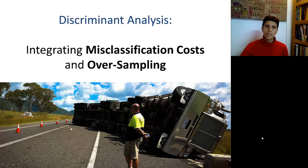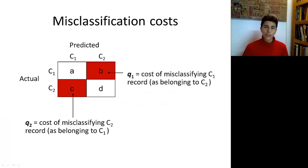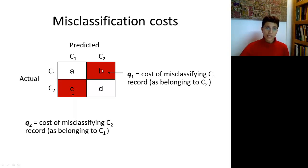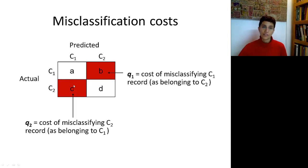Let's first see what we mean by misclassification costs and oversampling. Remember the confusion matrix, also called the classification matrix, where we can compare the actuals and the predicted counts. The white cells correspond to the correct predictions: A records correctly classified as C1, and D records correctly classified as C2. The red cells show us misclassifications — for example, B records classified as C2 but in fact they were C1s, and vice versa.